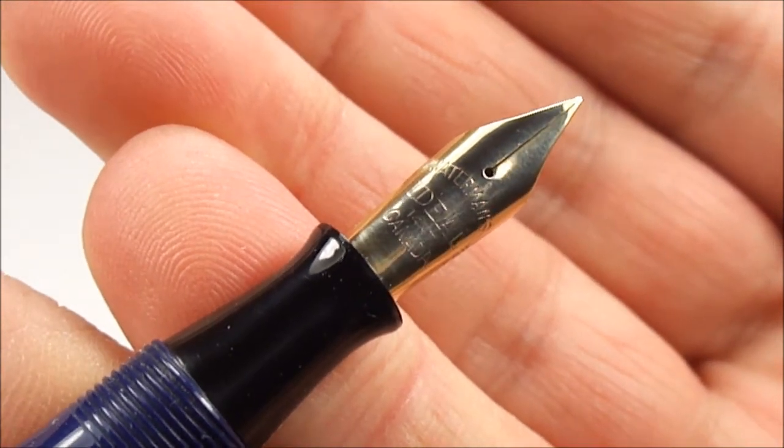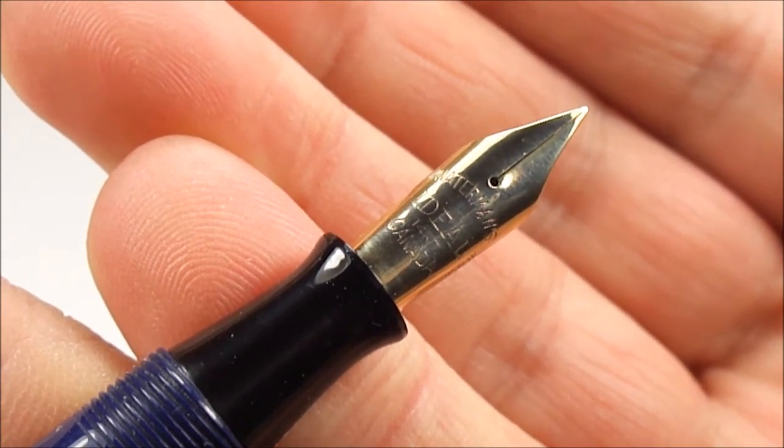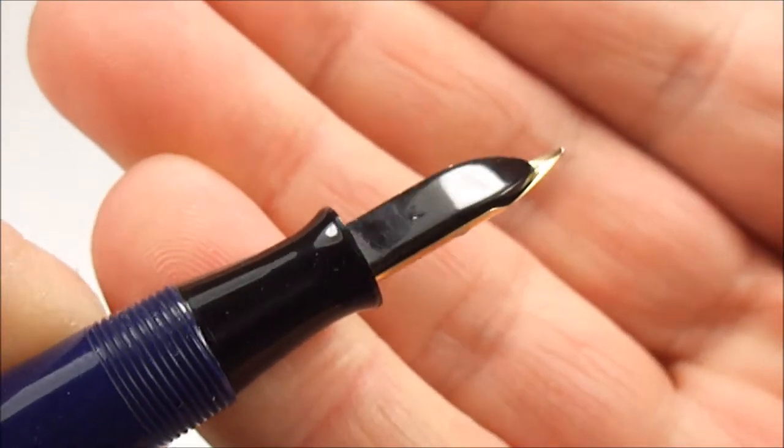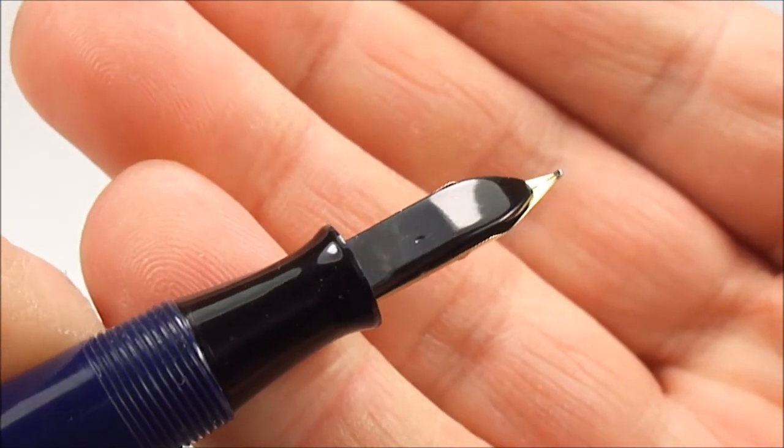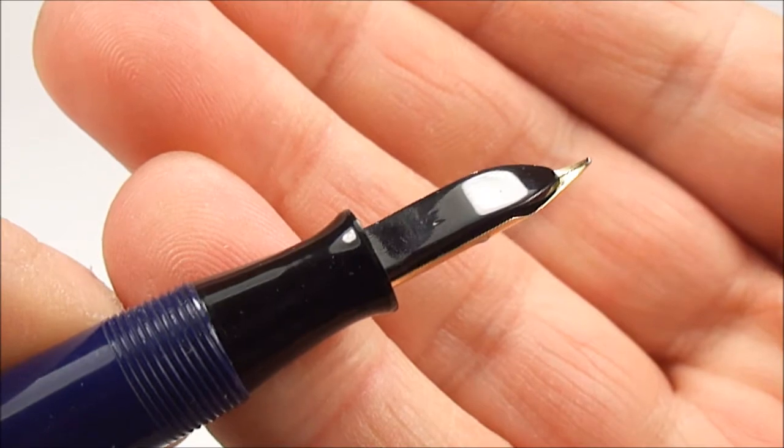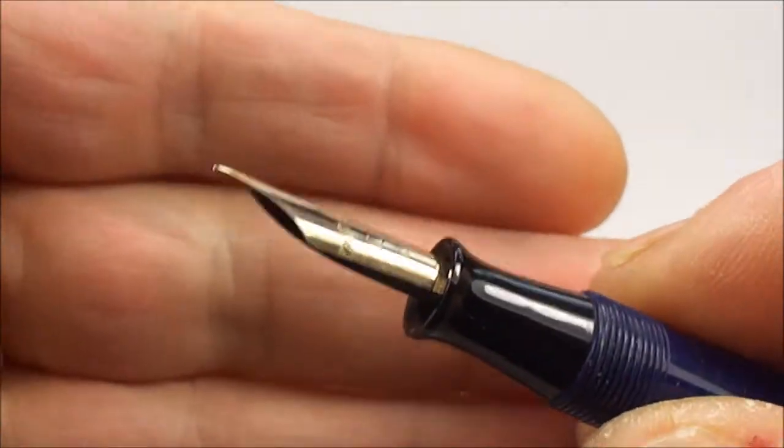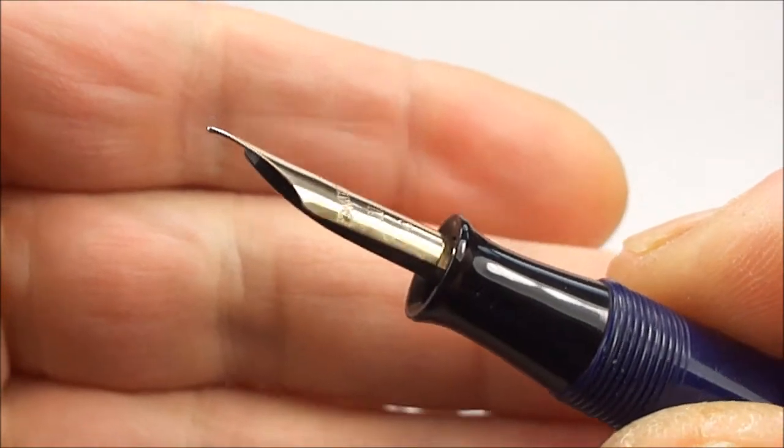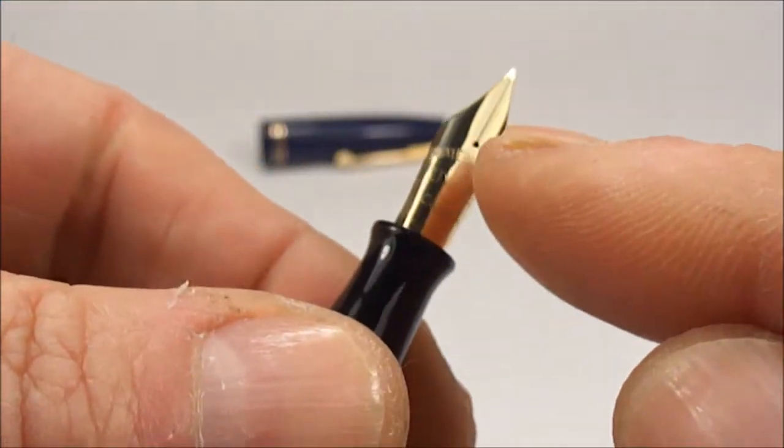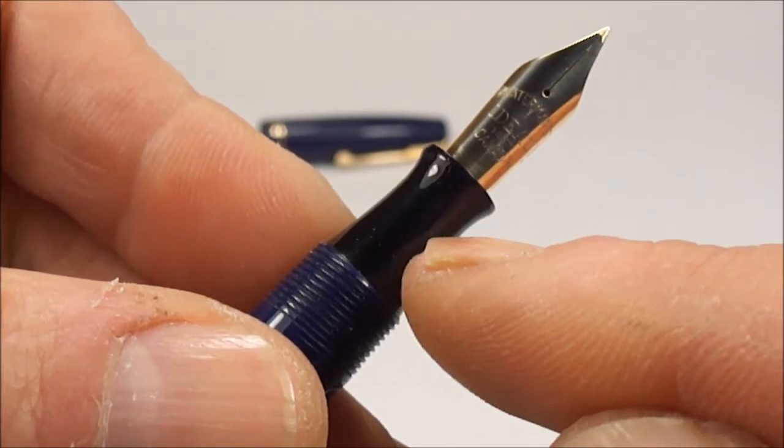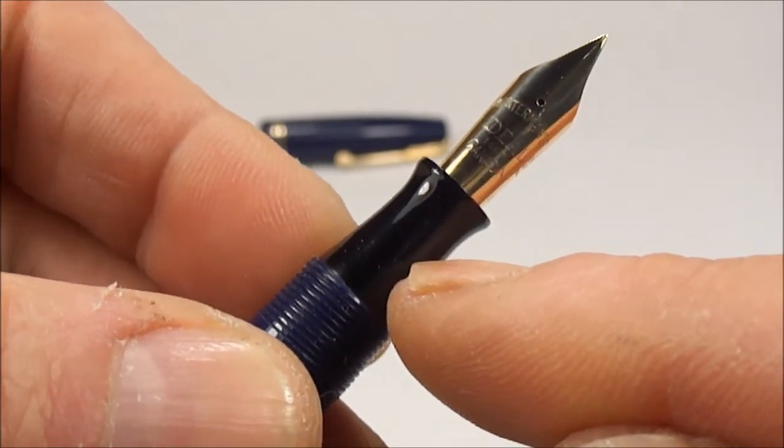Let's turn it over. You can see it's got the standard Waterman's feed to the back there. If we give you a sort of sideways view, it's a lovely nib and quite a large nib as well. It actually went into this section quite a lot, so this is actually quite a large nib.